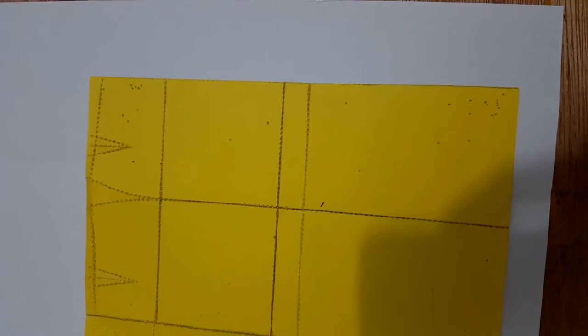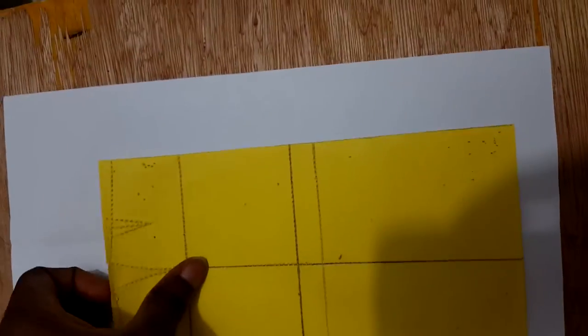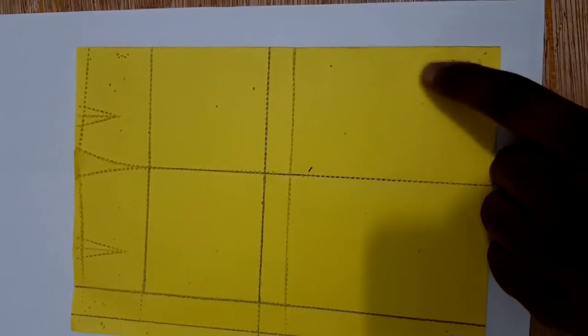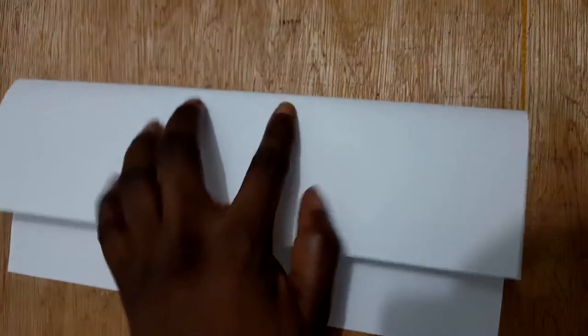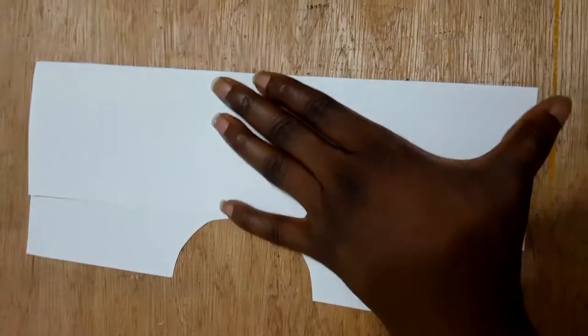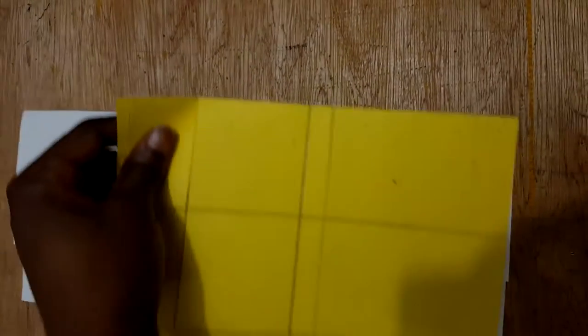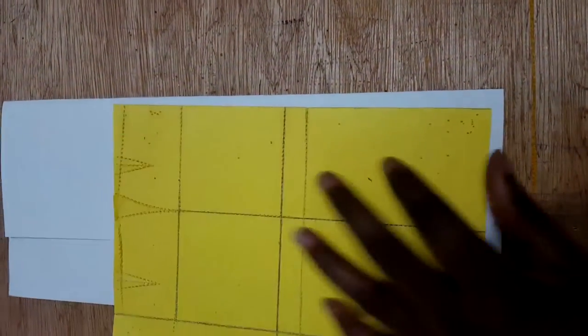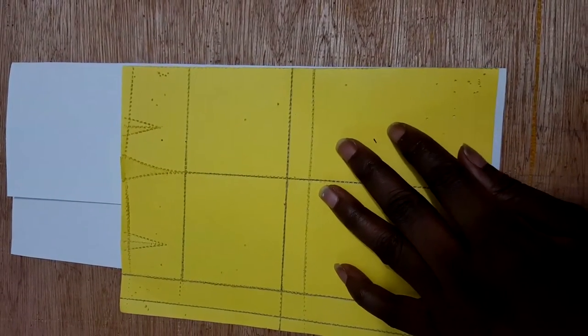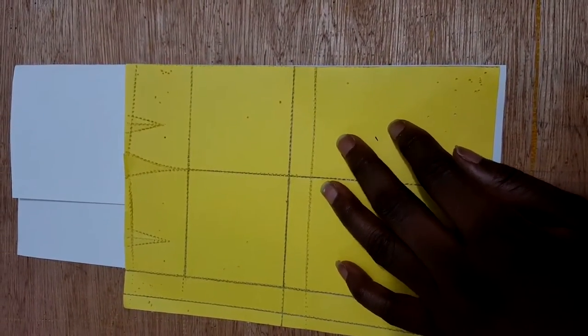So now I'm just going to trace my half front pattern on another paper. First you have to fold your paper into two, and place the front pattern on the fold of the folded pattern paper like so.